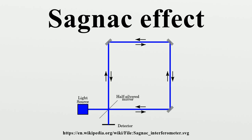Typically three or more mirrors are used, so that counter-propagating light beams follow a closed path such as a triangle or square. Alternatively, fiber optics can be employed to guide the light through a closed path. If the platform on which the ring interferometer is mounted is rotating, the interference fringes are displaced compared to their position when the platform is not rotating. The amount of displacement is proportional to the angular velocity of the rotating platform. The axis of rotation does not have to be inside the enclosed area.